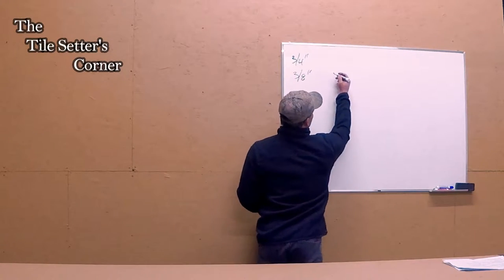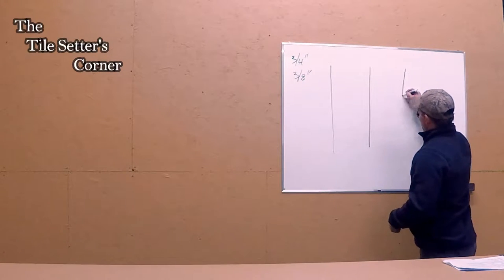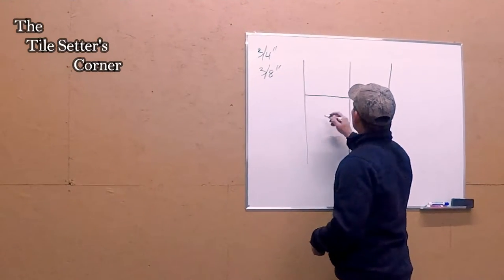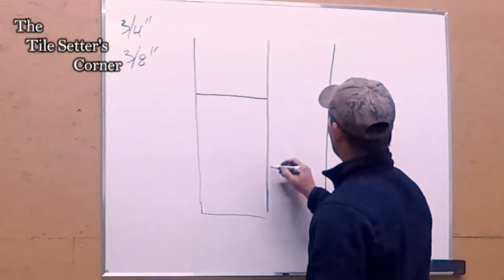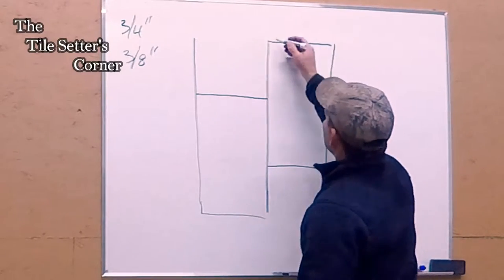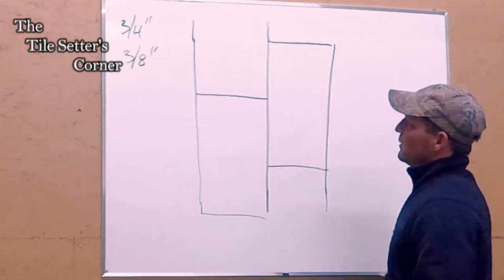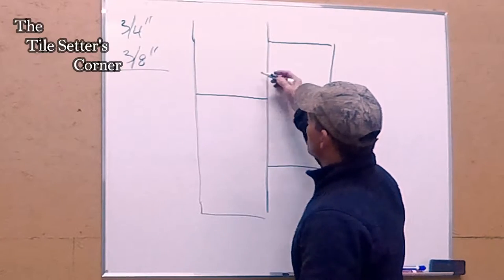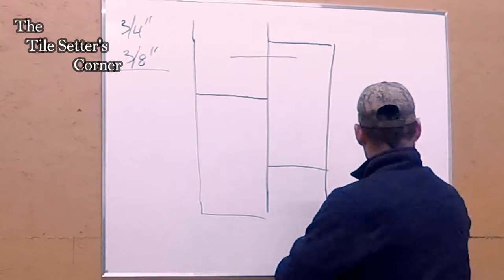So we're just going to show you an example of a standard subfloor when you walk into the house. Let's just say this is your subfloor and these are the sheets here. You can see that the seams are separate. So now when you want to throw your underlay down, you want to actually cross the seams like this.